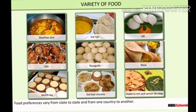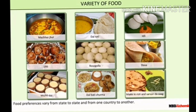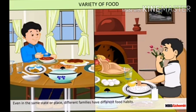Ask your friend what they had for breakfast — is it the same as yours? You will notice your friend eats different food items. It means there is a variety of food around us, and it varies from place to place. Food preferences vary from state to state and from one country to another. Even in the same family, the food habits of different people are different. Some like chapati but some don't, someone likes rice but others don't.